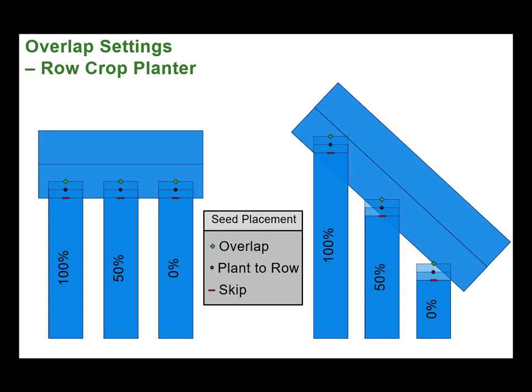The seed placement setting allows you to set a specific inline offset for the sections to achieve intentional skip or overlap relative to the first headland row. The effect of plant to row is essentially to add half of a row width of overlap after the edge of previous coverage is crossed. If intentional skip is set to half row width, then a row crop planter's overlap settings will behave the same as other machine types.